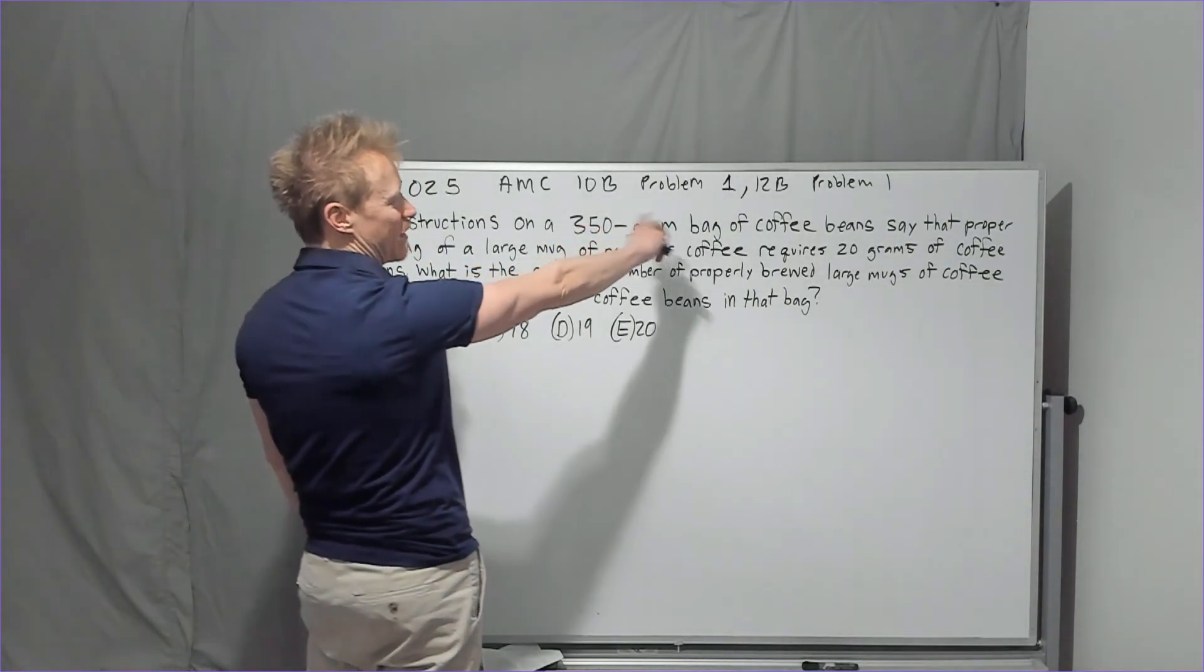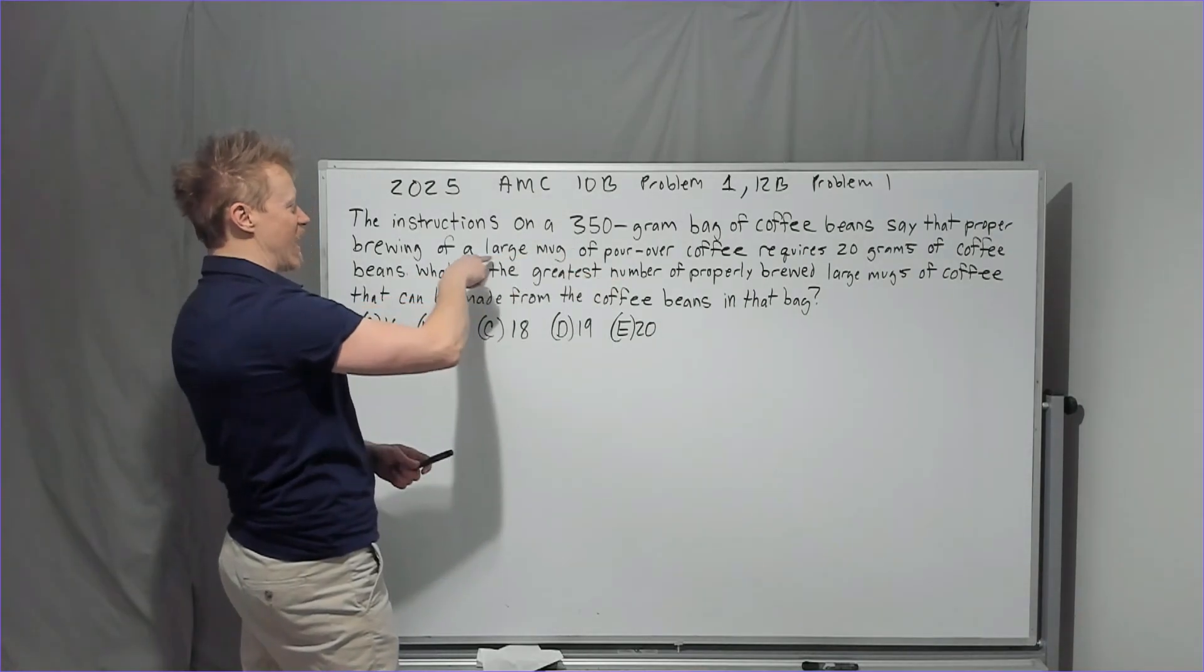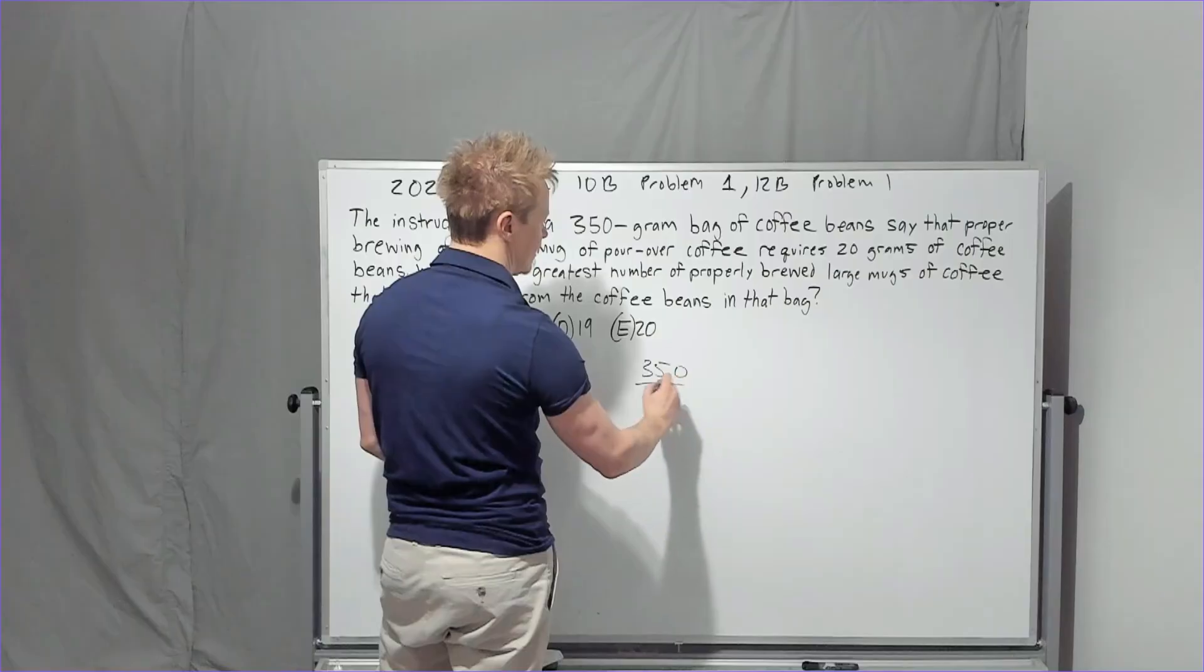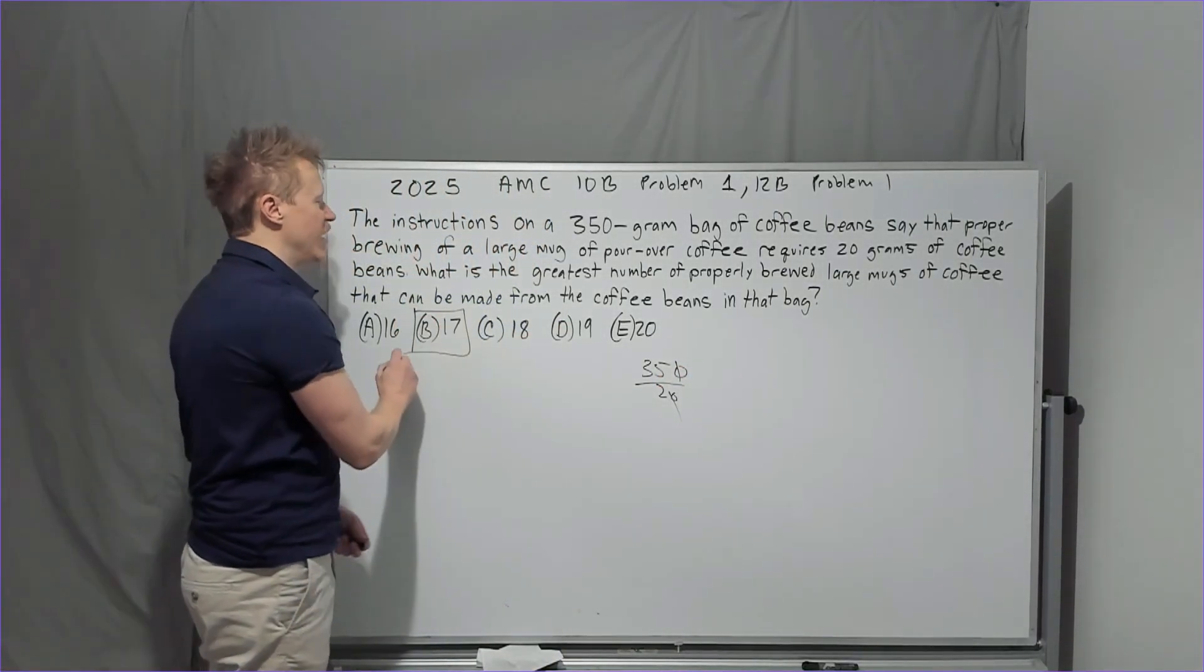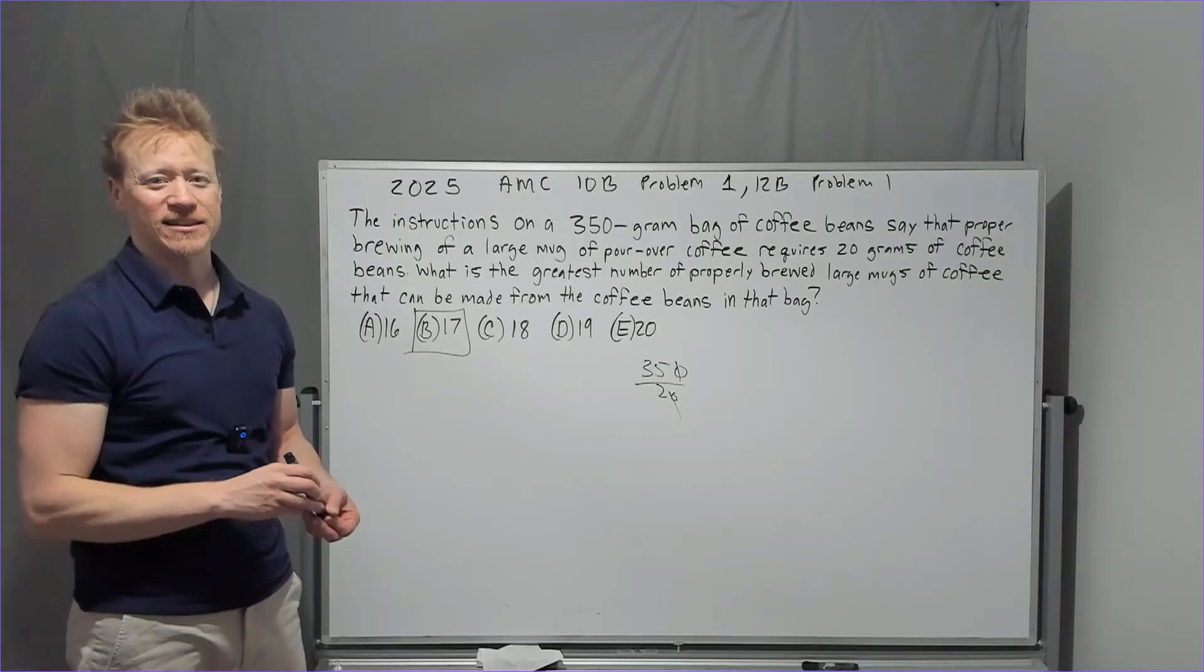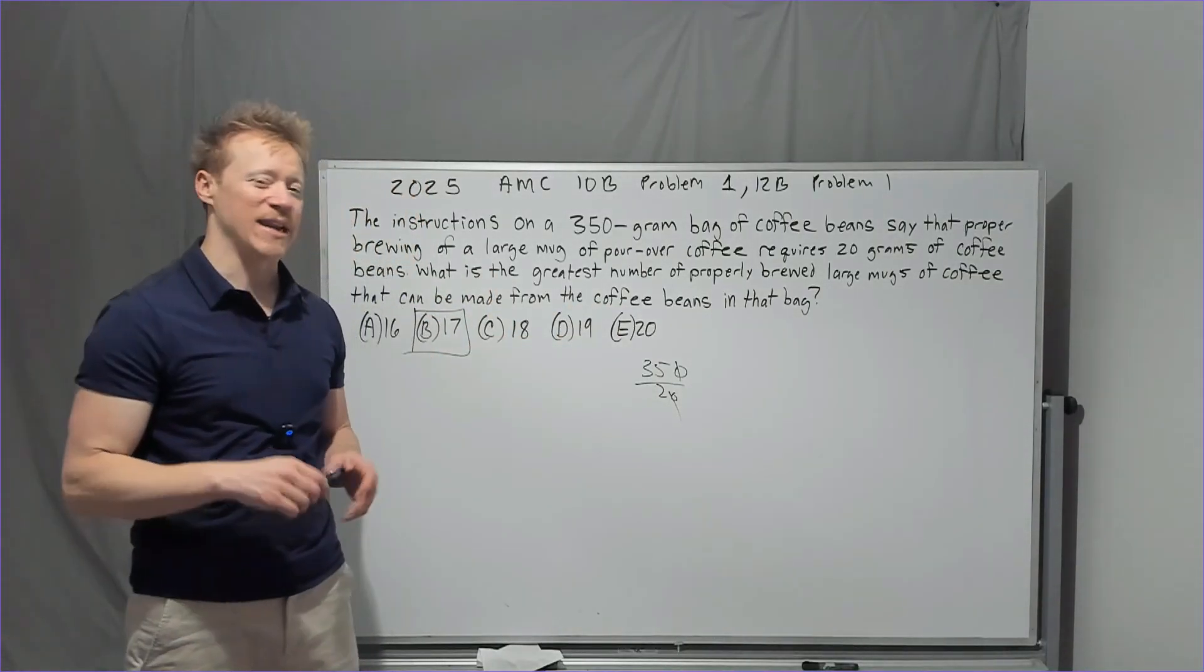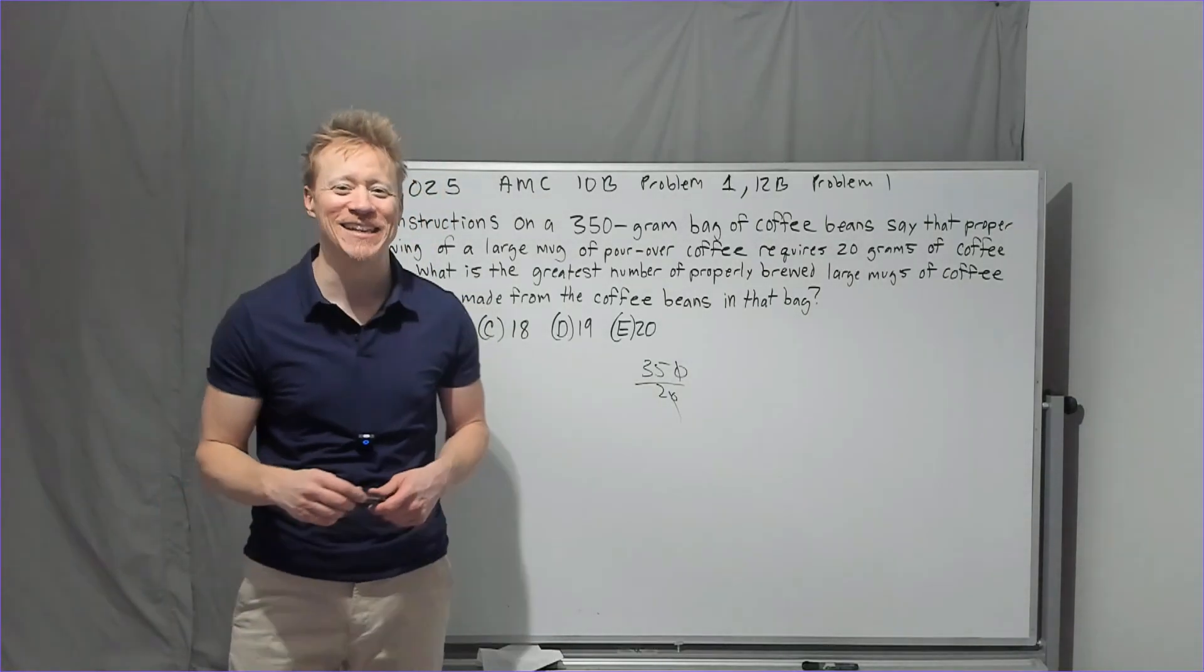I would say the overall challenge of this problem is simply reading comprehension and that you're hypervigilant to not make a mistake. So 350 grams, it takes 20 grams to make a large mug. You're just going to take this 350 divided by 20, knock off the zero, 17.5. You're only able to get 17.